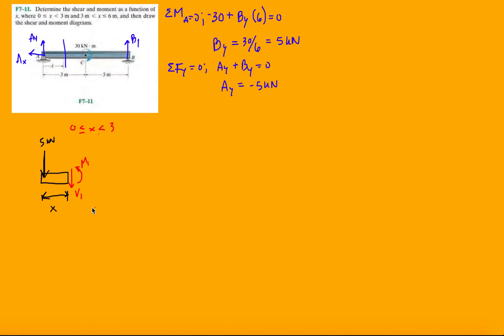Now let's just solve for that. Moment about point 1, we have M1 already plus 5x equals zero, and then M1 is minus 5x.